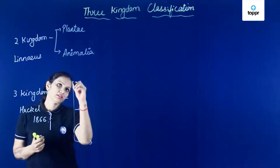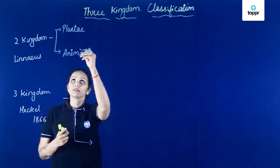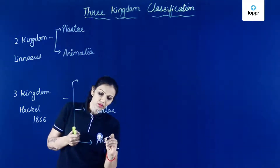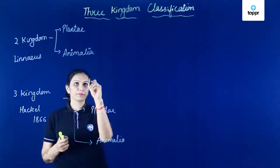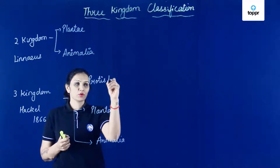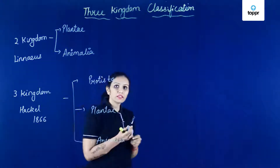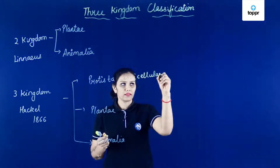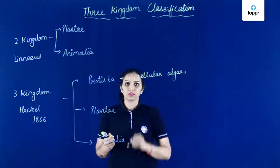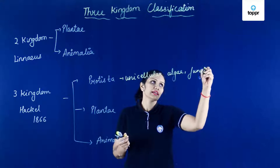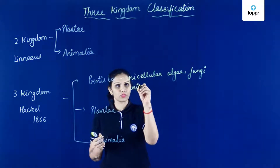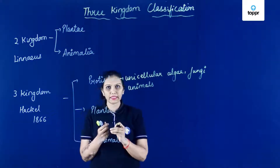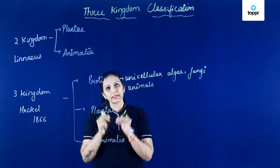Aur unhone classify kiya in three kingdoms — kon konsa? One is Plantae, one is Animalia, aur third kingdom unhone diya Protista. Protista diya gaya to include all the unicellular algae, unicellular fungi, and unicellular animals. Because the question was — these only couldn't fit into Plantae and Animalia, so he gave the third kingdom, jo ki tha Protista.